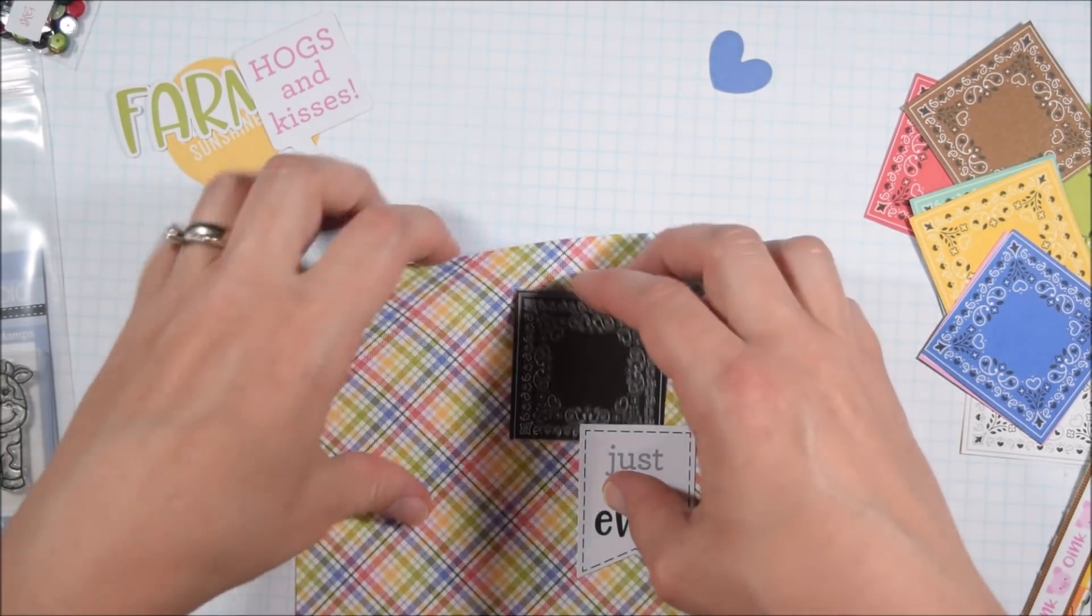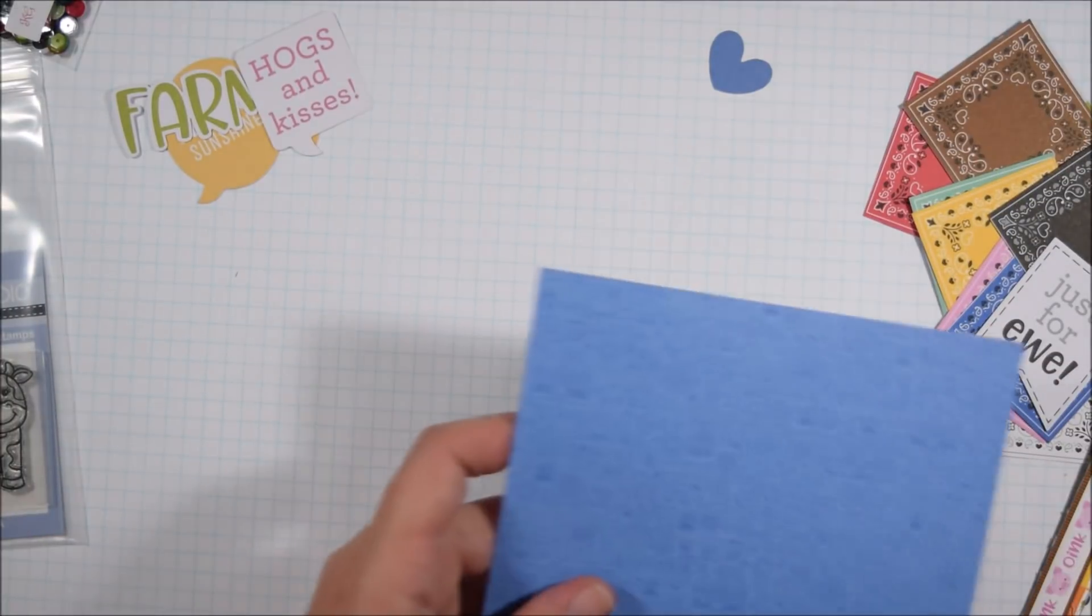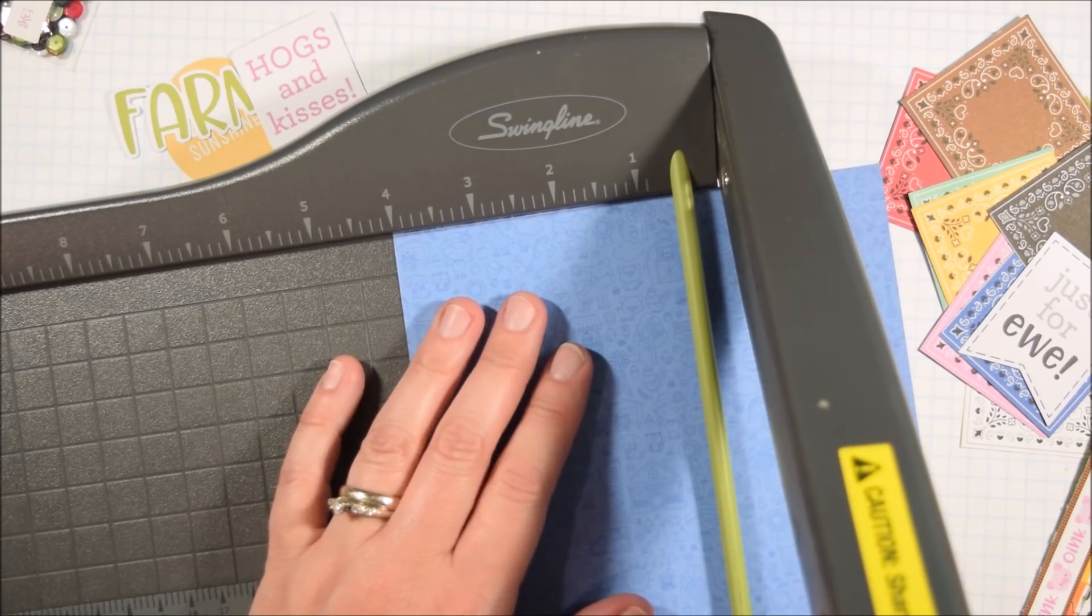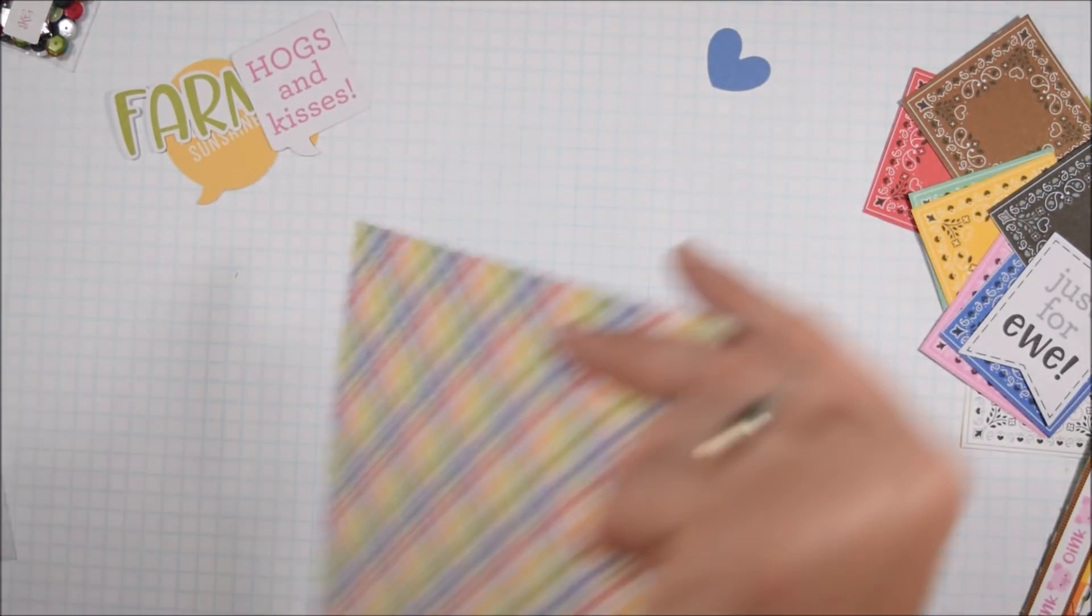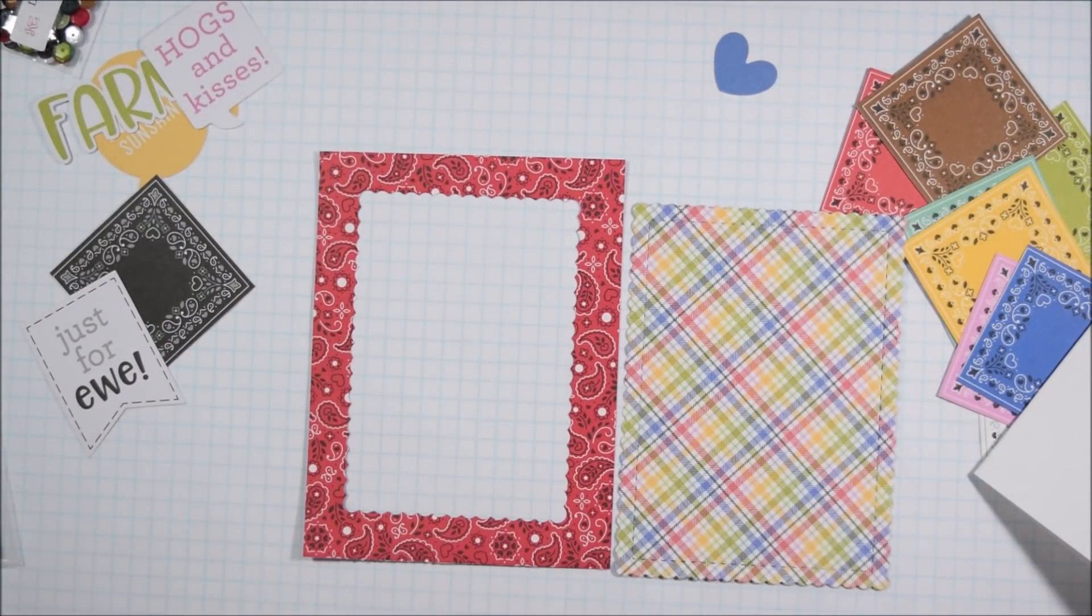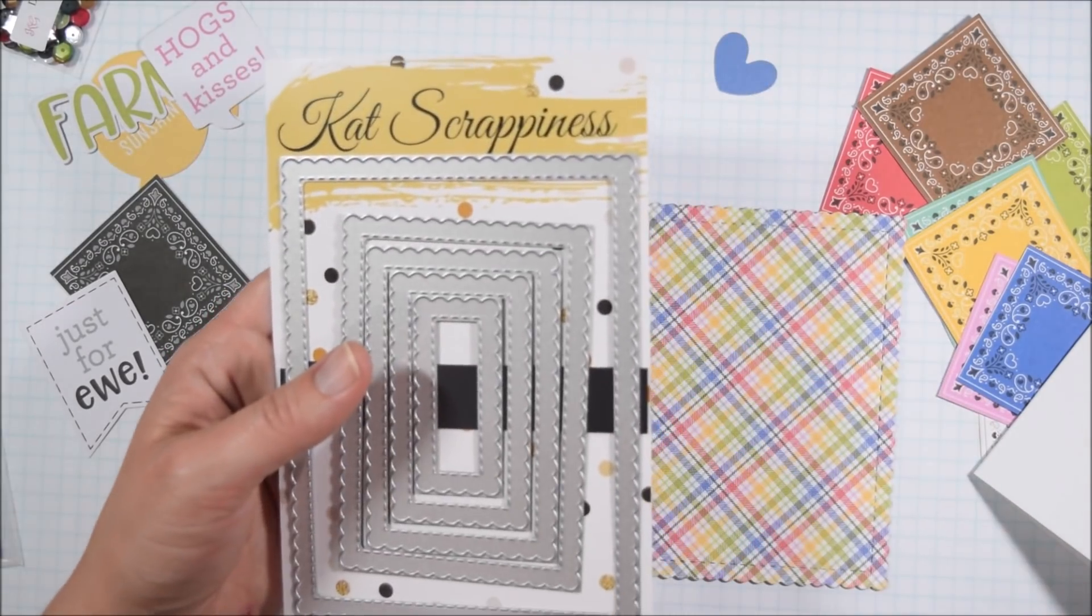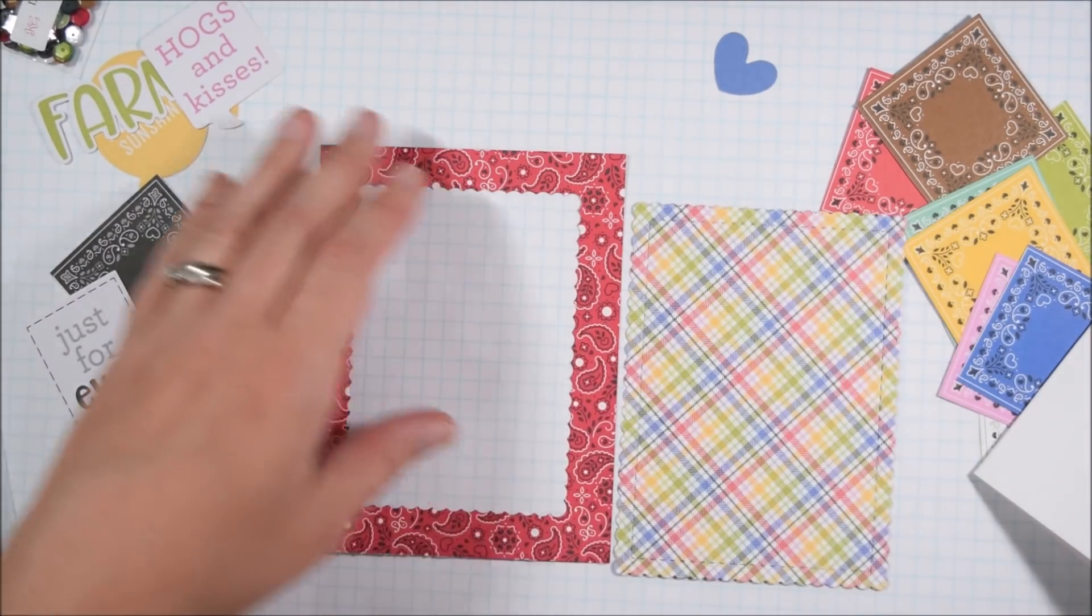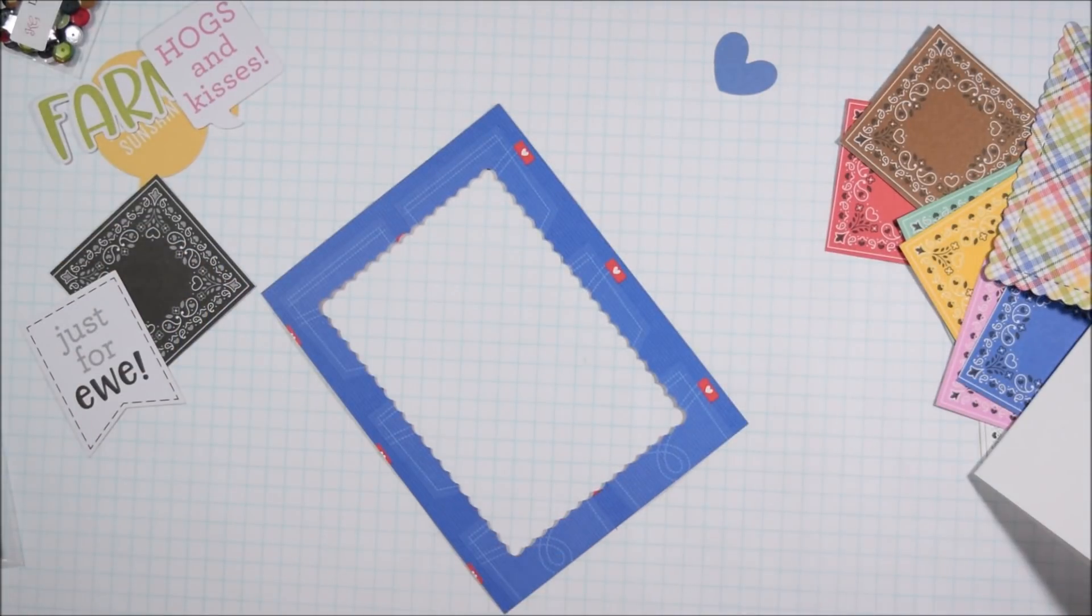I wanted to use the Just For You little cut-apart that came with the kit because I felt like it would just make such a simple and easy card. And there was a little sheep sticker to pair perfectly with it. So I'm using my Cat Scrappiness Stitch Scallop dies a lot throughout the video, so I'll mention it a few times if you don't quite catch what I'm doing here with it.